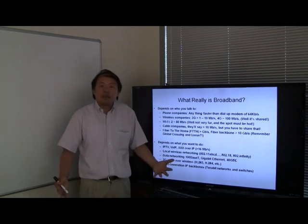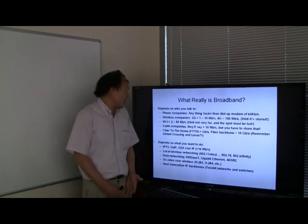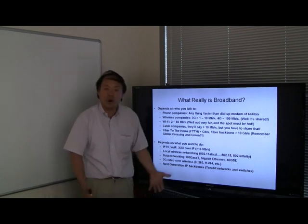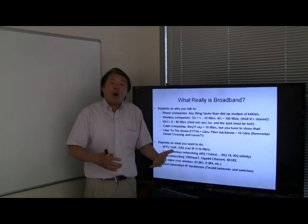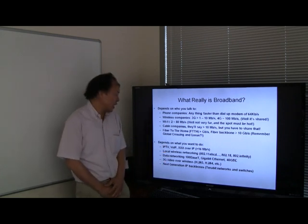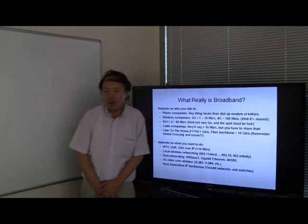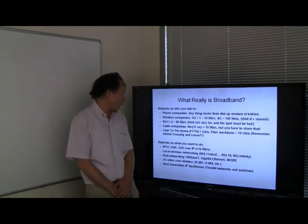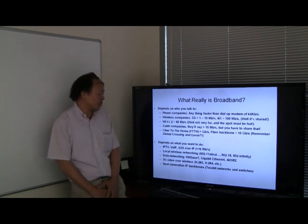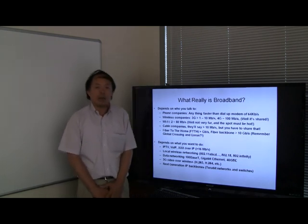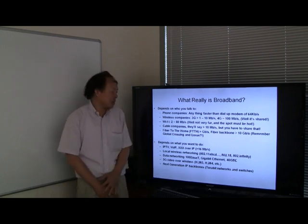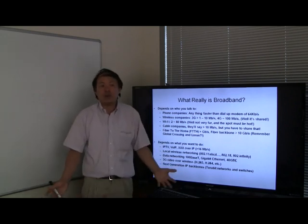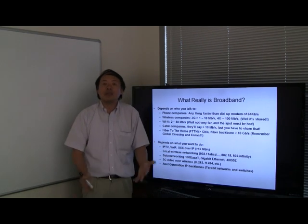With the 3G network, people started offering video over wireless, and there were standards such as H.263 and H.264 that provide low or high quality video over wireless. But these days, with 4G networking, you can do pretty good quality, high-definition video over wireless. There is also the next generation of IP backbones where networks operate at terabits per second link speed, and switches can reach a total throughput of a petabit per second. These are the subjects we're going to deal with in this course.